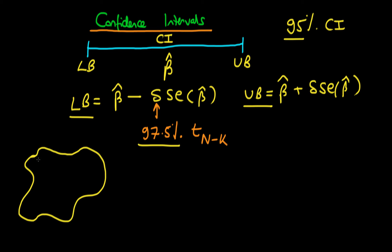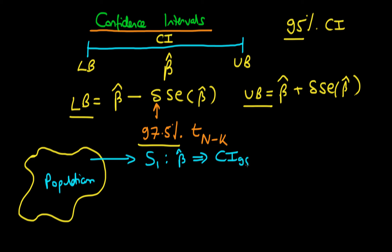But what does it actually mean to have a 95% confidence interval? The idea is that if we have some population and we take repeated samples from that population — so we take sample S1 — within that sample we calculate our least squares estimate of the parameter beta, which we call beta hat, and then we calculate our 95% confidence interval for that sample. Then we repeat this: we take another sample from the population, calculate our estimate beta hat two, and calculate the confidence interval for that second sample.